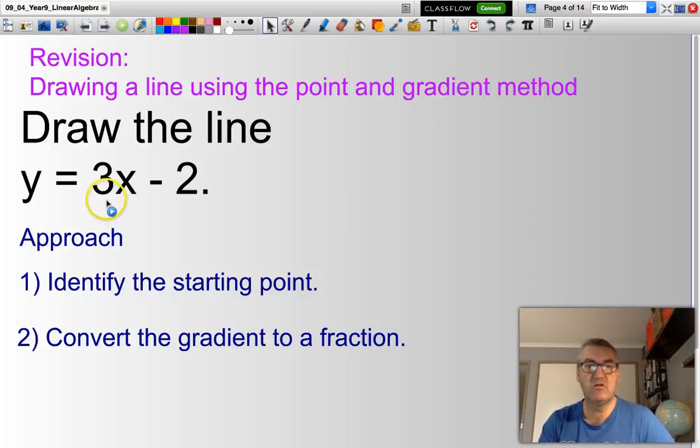For instance, if you were to draw the line y = 3x - 2, you would identify the starting point from the y-intercept, which is this one here, and you would convert the gradient to a fraction, which is this one here.